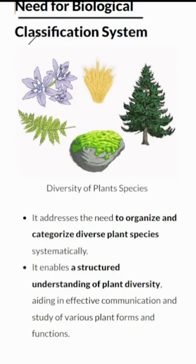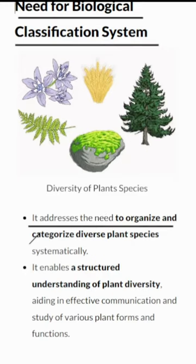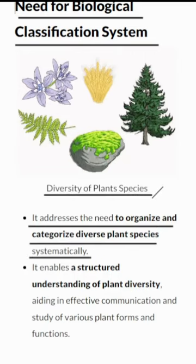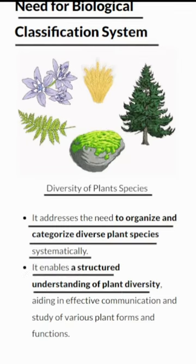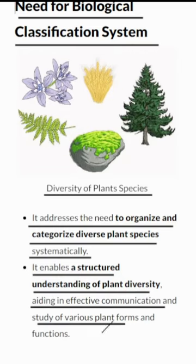Need for Biological Classification System. One of the main purposes of this system is to systematically organize and categorize the incredible diversity of plant species. By classifying plants, we make it easier to study and understand various plant forms and their functions. This organization helps us locate and study specific topics easily. Classifying plants allows scientists to communicate effectively and study them systematically.